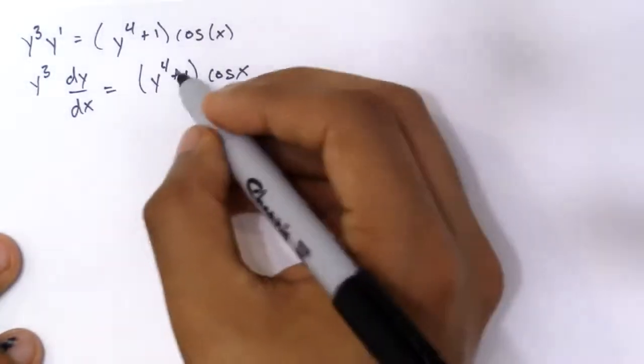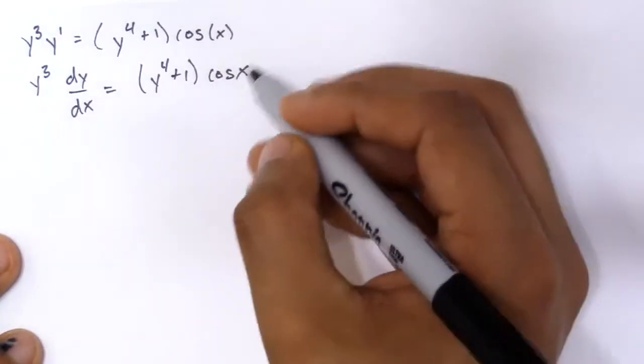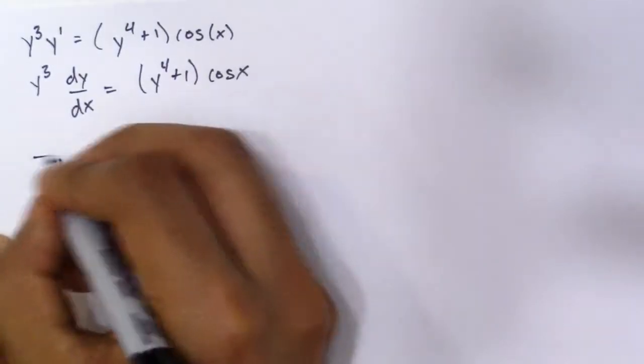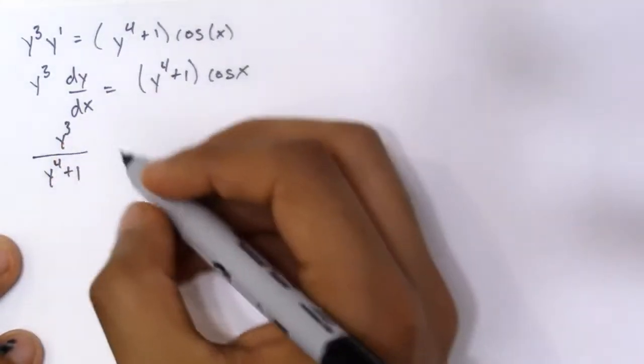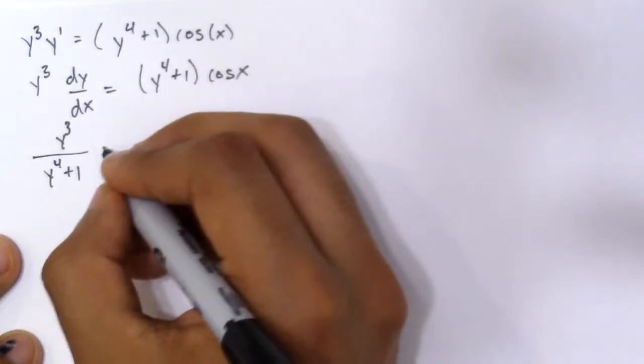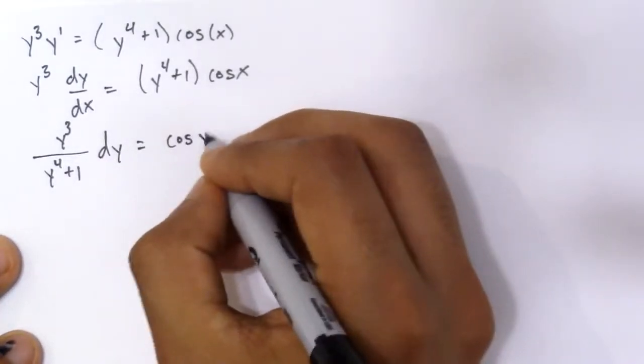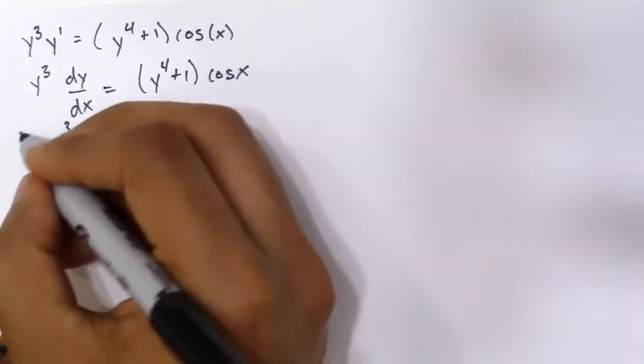Now, I'm going to divide this over here and multiply dx on this side. So you get y³ divided by (y⁴+1) dy which equals cos x dx. And now we can take the integral.